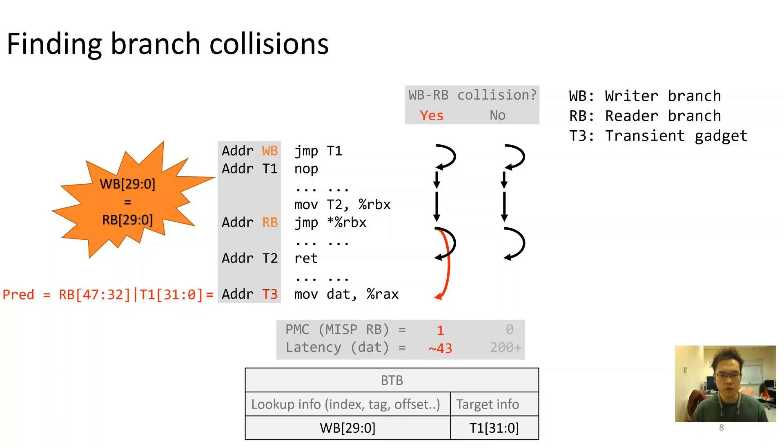Here, we refer the first branch at address WB, the writer branch, and the second branch at RB, the reader branch. The code segment at T3 is usually referred as transient execution gadget.